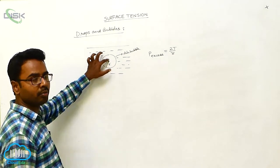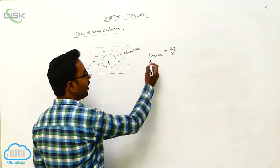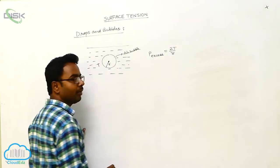Now here also, inside the air bubble, there is some excess pressure. The excess pressure inside the air bubble is given by P_excess = 2T/R.